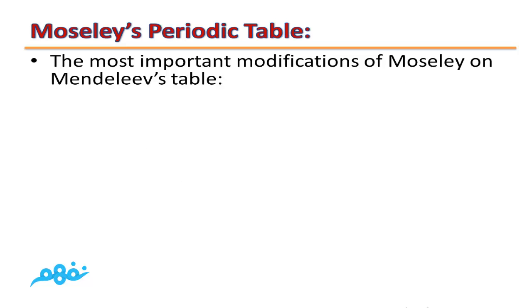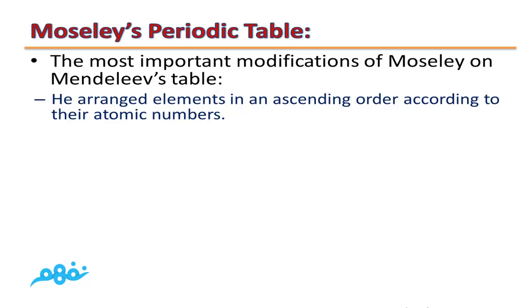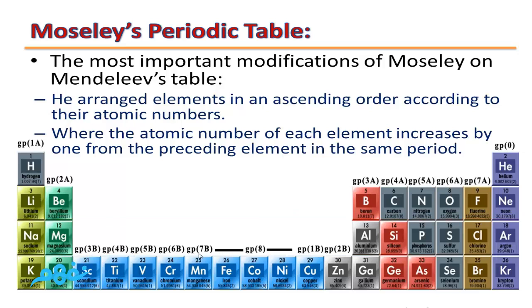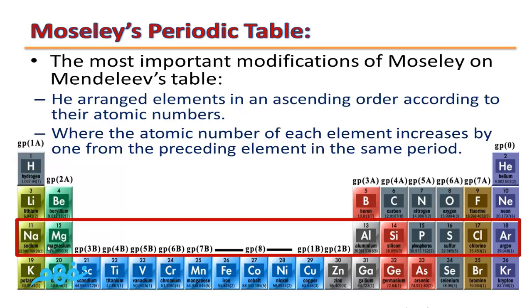The most important modifications Moseley made to Mendeleev's table: First, Moseley rearranged elements in ascending order according to their atomic numbers, where the atomic number of each element increases by one from the preceding element in the same period. This is the most powerful advantage of Moseley's table - we can predict the atomic numbers of elements only by knowing their position, because the atomic number increases from left to right in a uniform way.